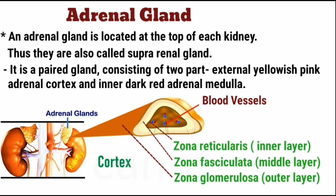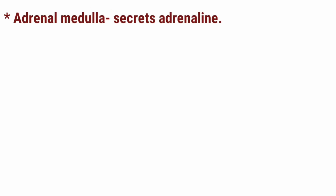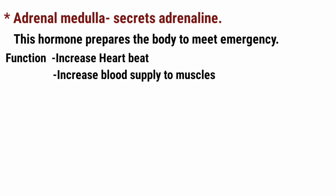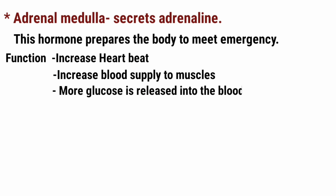The adrenal cortex produces steroid hormones: mineralocorticoids, glucocorticoids, and androgens. The adrenal medulla secretes adrenaline. This hormone prepares the body to meet emergencies. Its functions include increasing heartbeat, increasing blood supply to muscles, and releasing more glucose into the blood.